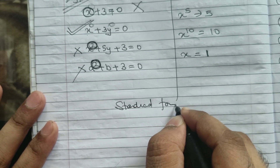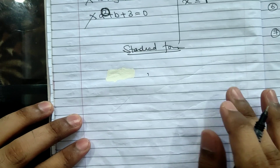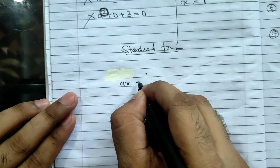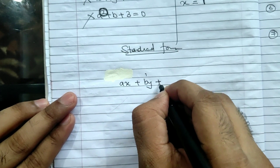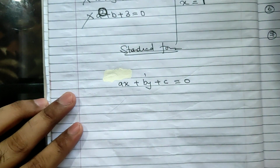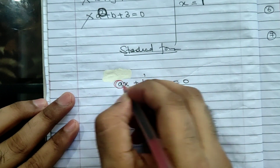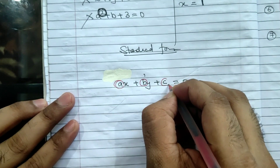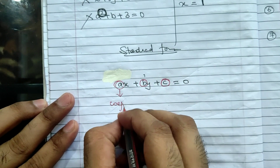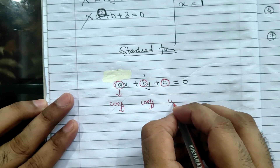Let us understand the standard form of linear equation in two variables. The standard form is: AX plus BY plus C is equal to 0. Here A, B, and C are numbers — A is called the coefficient of x, B is the coefficient of y, and C is the constant.